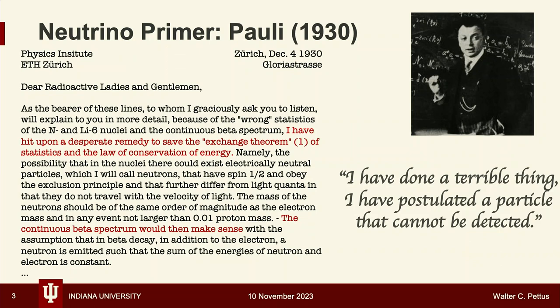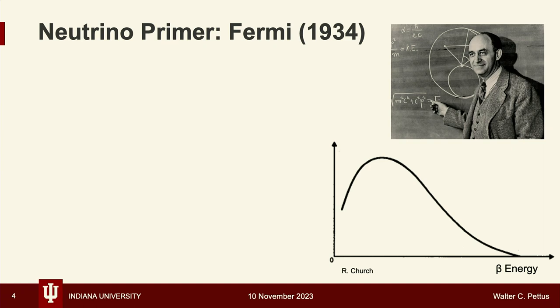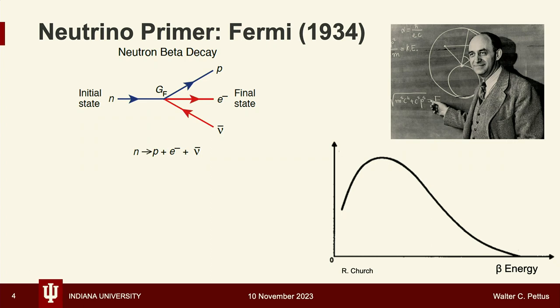Pauli also recognized exactly what he was doing — he didn't have a mechanism whereby this particle could be detected. But it didn't take very long for other physicists to take the baton. Enrico Fermi in the 1930s was writing down his theory of the weak interaction. He had this interaction which could explain beta decay with the emission of these neutrinos.